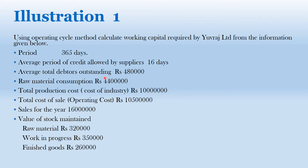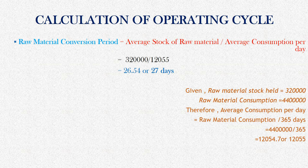The problem is that we have to solve using 365 days. Depending on the problem, the number of days may vary — 360 or 365. The calculation will depend on that. Let us see how to solve the problem. First of all, we need to calculate various components of the operating cycle.